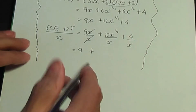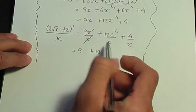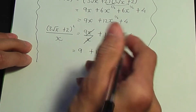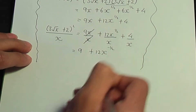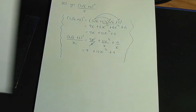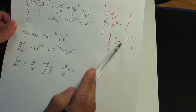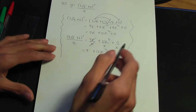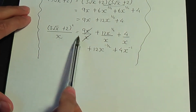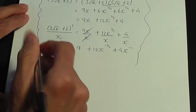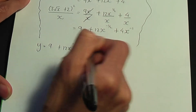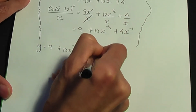So I have plus 12, and x to the half divided by x to the 1 is x to the power half minus 1, which is minus half. Plus — remember another rule of indices: 1 over x^n is x to the minus n — so 1 over x is x to the minus 1. This gives the simplified y: y equals 9 plus 12x to the minus half plus 4x to the minus 1.